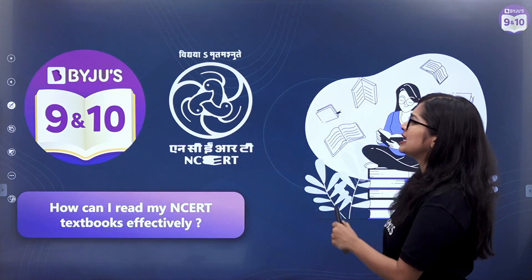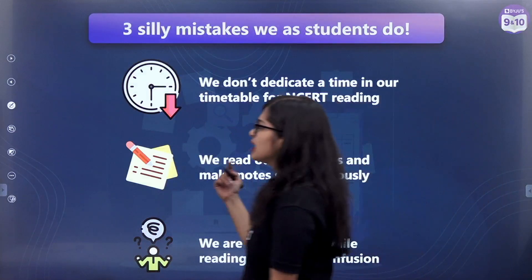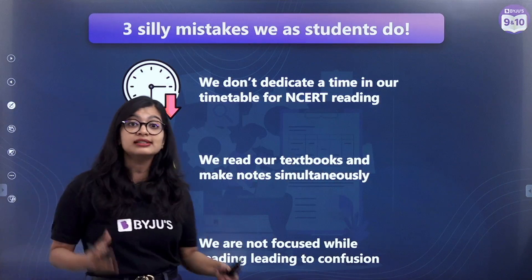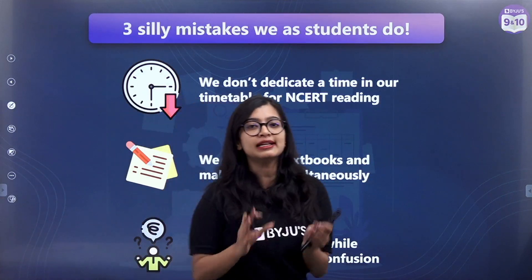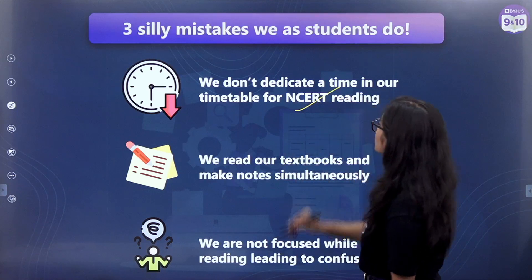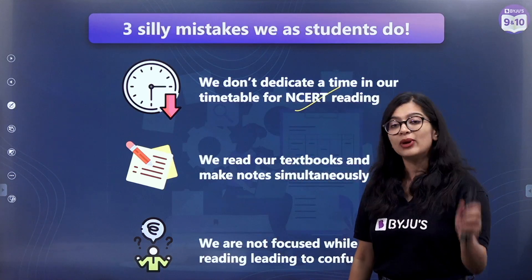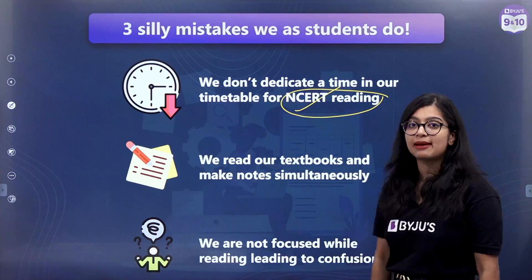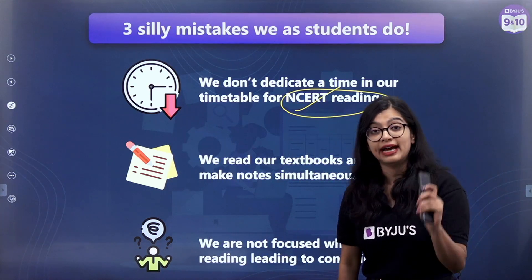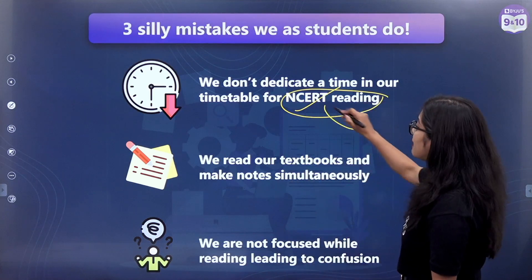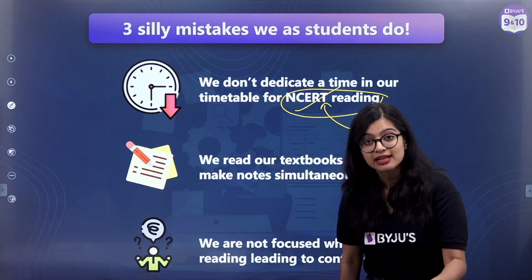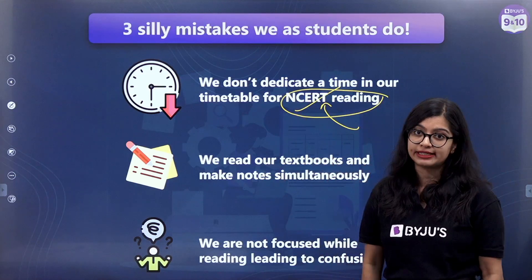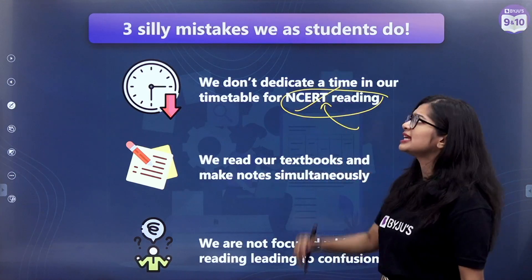As students, there are some silly mistakes that we tend to do. First and foremost, there are some students who make a timetable, but they don't dedicate a certain amount of time to do NCERT reading. In 9th and 10th grade, NCERT reading becomes a very important step, because questions — whether they are direct, indirect, or application-based — will all be based off the NCERT textbook. So you have to make sure that you dedicate time in your timetable for NCERT reading. That's one of the silly mistakes we do as students.